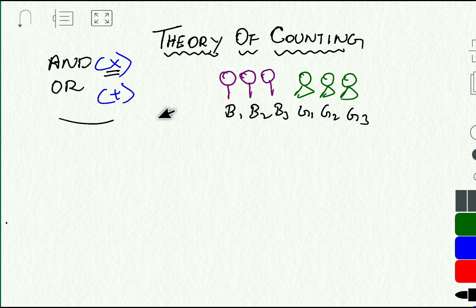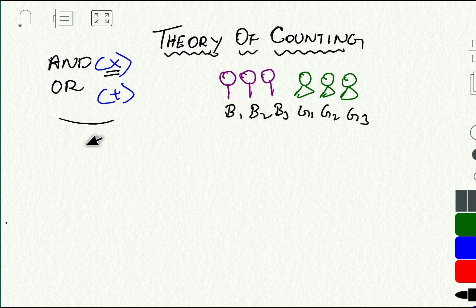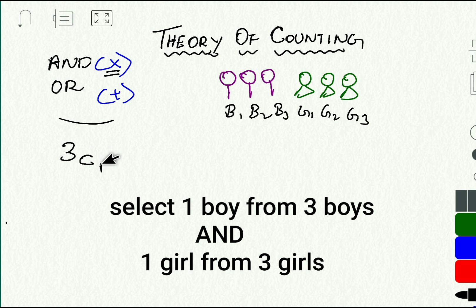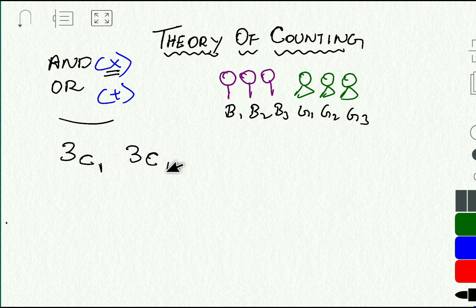Assume you are working as an HR executive in an organization. Your HR manager is asking you to select one boy out of these three boys and one girl out of these three girls. So how many selections are possible? We have three boys — from these three boys you have to select one boy. If it is a selection, we use the protocol of combination. From three boys you select one in 3C1 ways, and from three girls you select one in 3C1 ways.